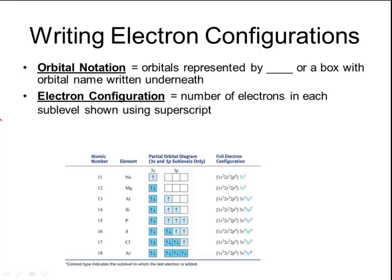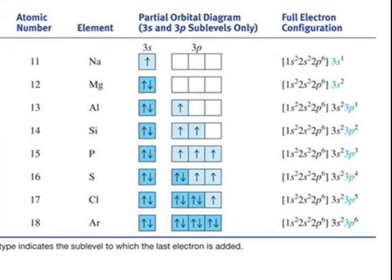You can also write an actual electron configuration, which shows you the number of electrons in each sub-level by using a superscript. Again, if you reference the picture at the bottom, the electron configurations look like a series of numbers and letters. So 1s2, 2s2, 2p6, 3s1 is the electron configuration for sodium.